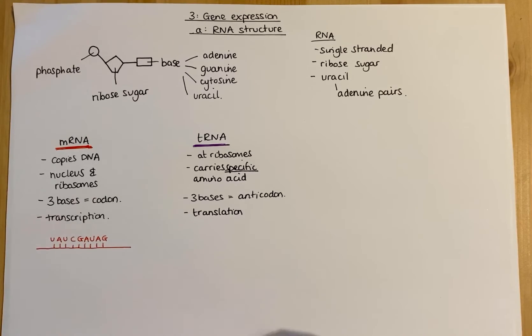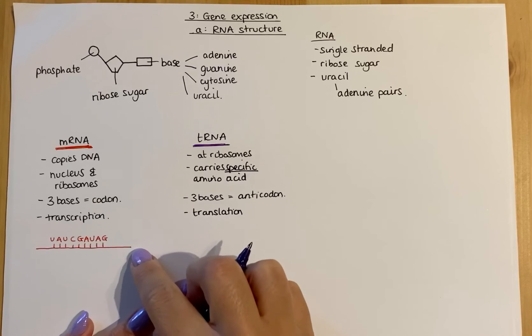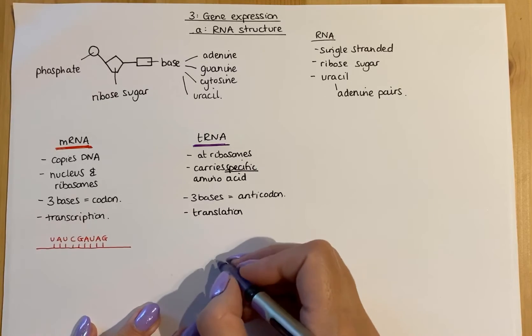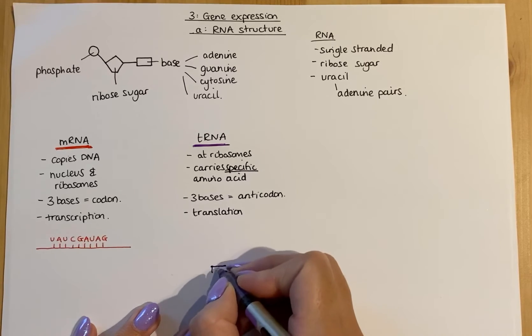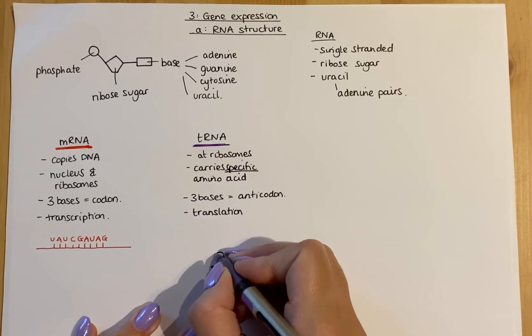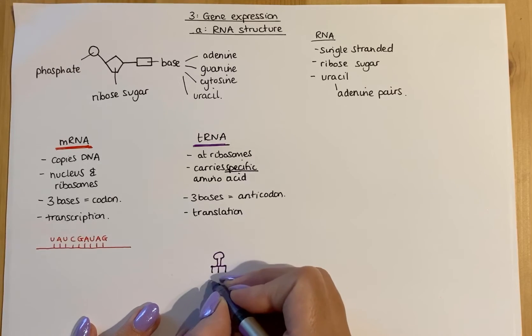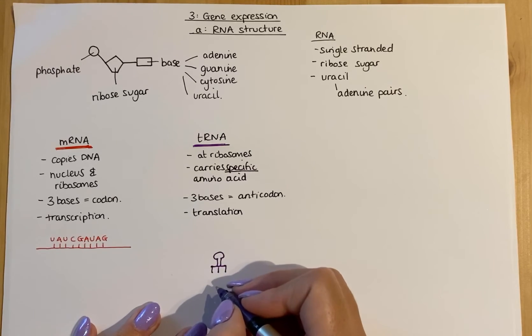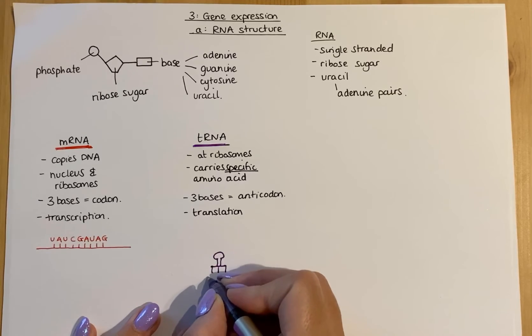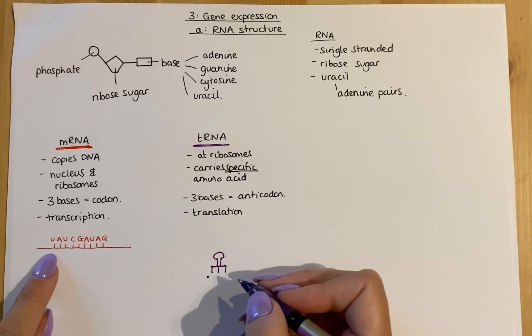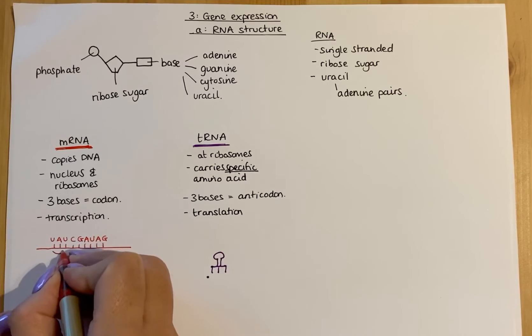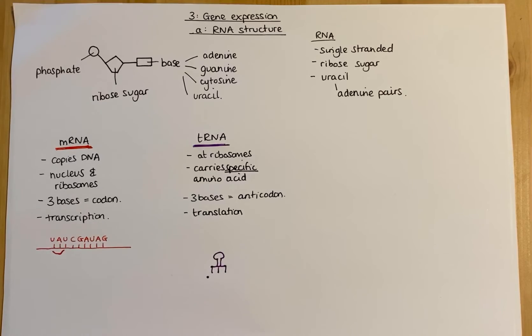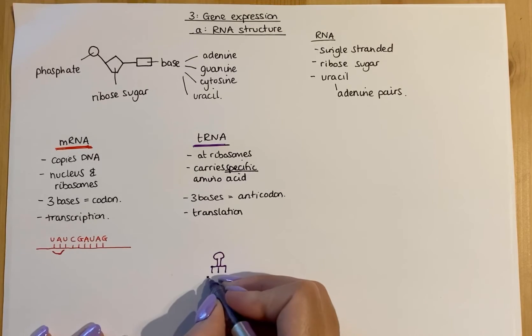In terms of a tRNA molecule, it looks slightly different to an mRNA because tRNA is folded, even though it is single stranded. Normally when I do a quick diagram, it is shown like this, with an anti-codon that would match a codon on mRNA. For example, if I paired it with this codon here, the bases that would pair would be AUA.